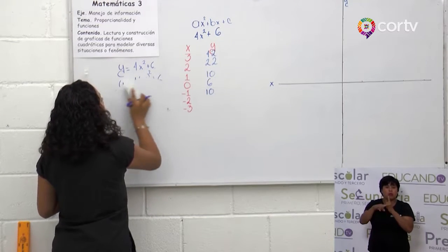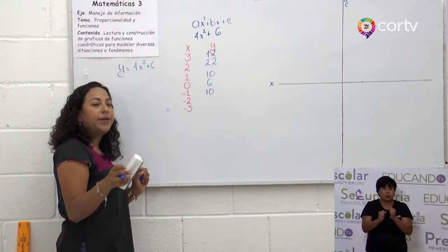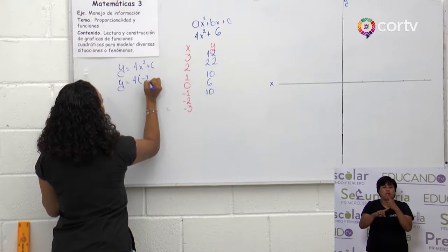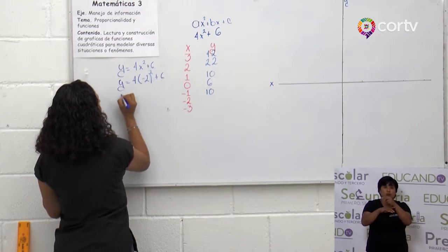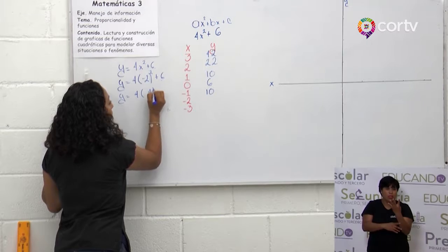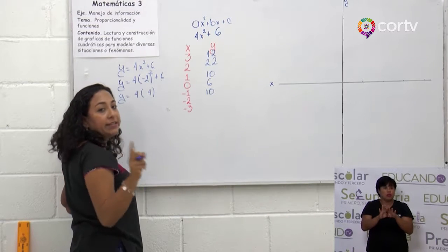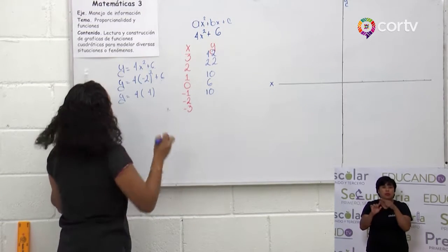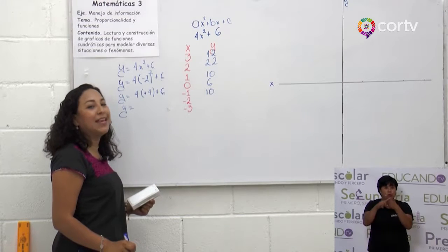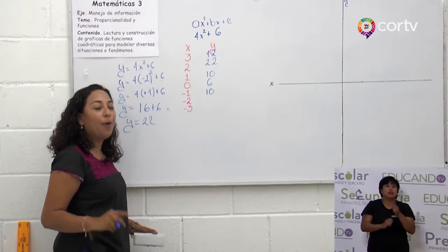Ahora con el menos 2. Y es igual a 4 que multiplica menos 2 elevado al cuadrado. El 2 se multiplica dos veces: 2 por 2 = 4. El signo, dos veces menos por menos, más. Esta es la regla de los signos: menos por menos, más. Más 6. 4 por 4 = 16. Más 6 = 22. Nos dio de nuevo 22.